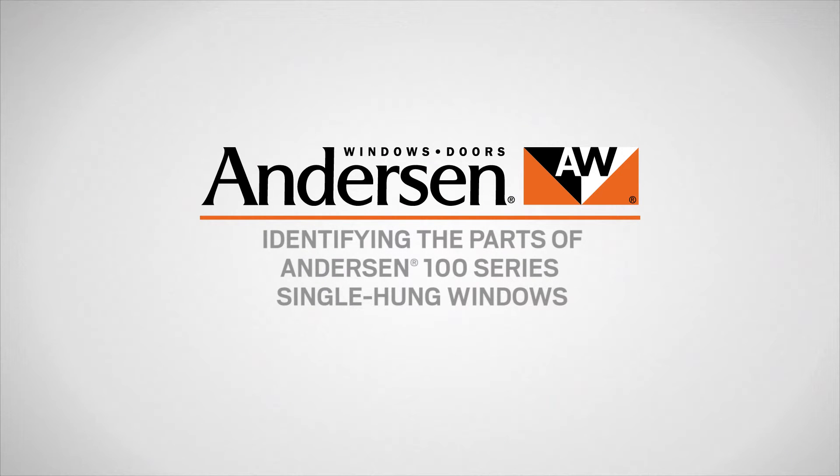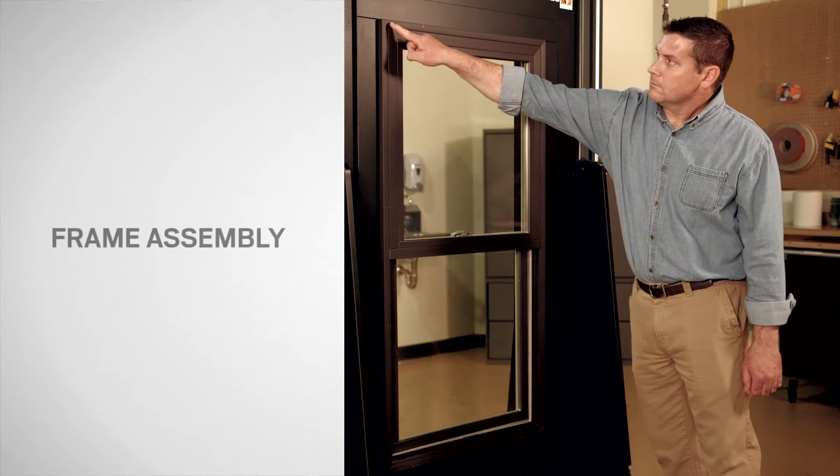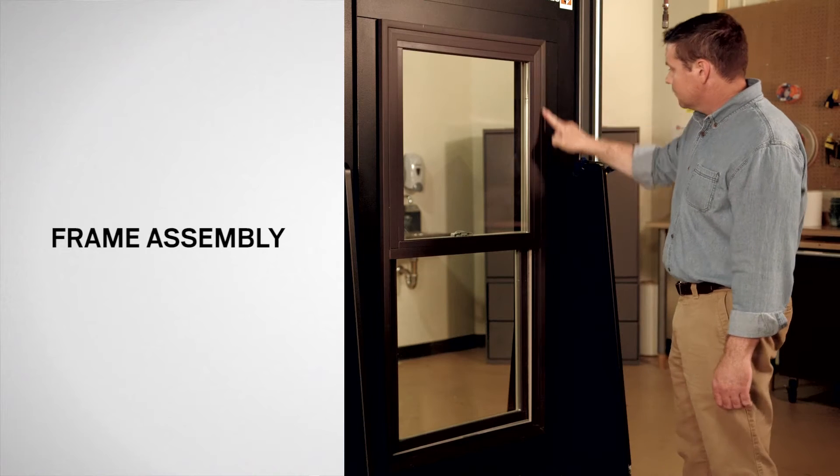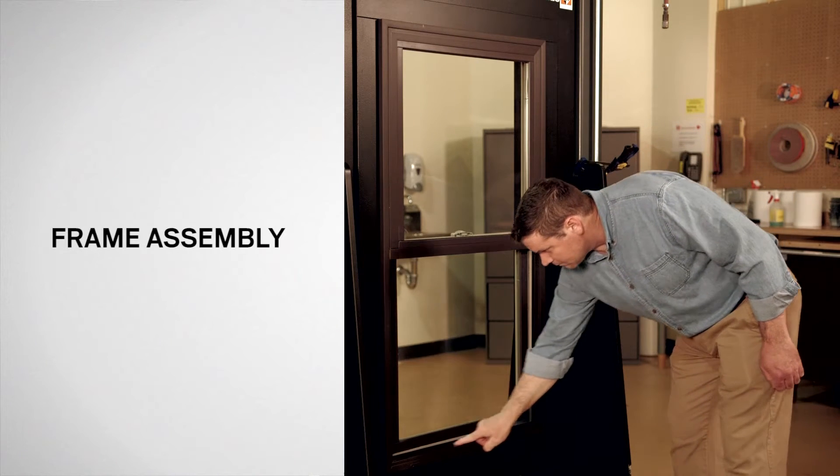This video will show you how to identify the parts of Andersen 100 series single-hung windows. From the exterior of the window, you can see the frame assembly, which is the outer structure.